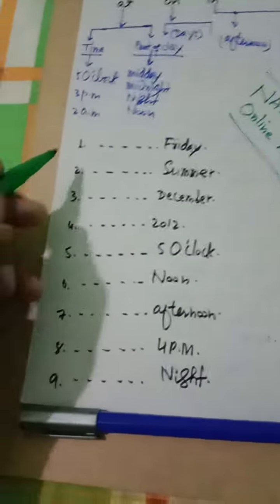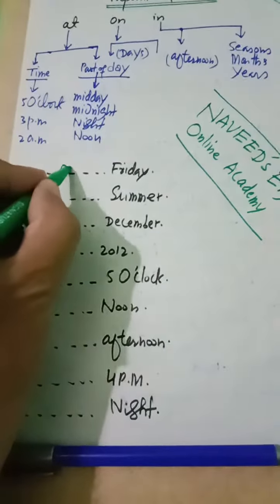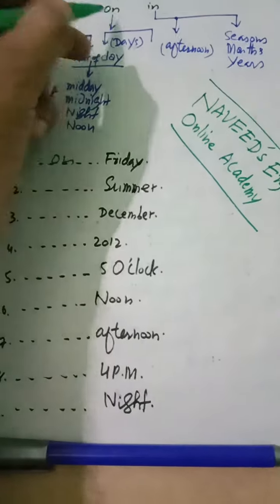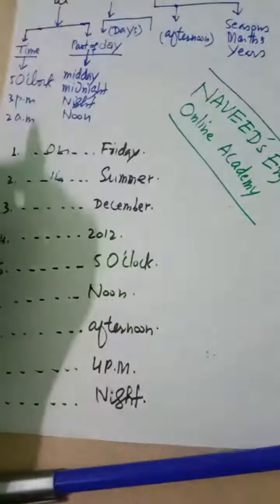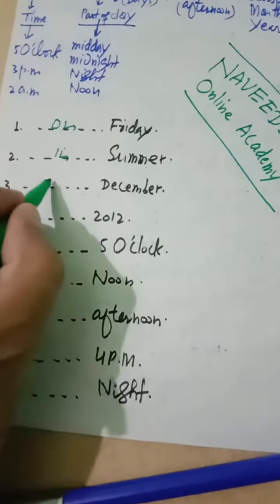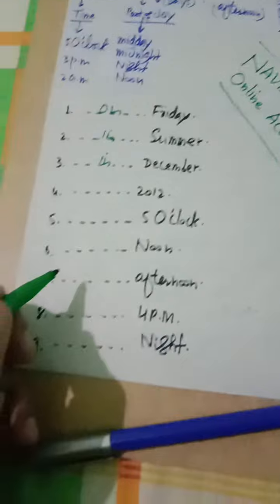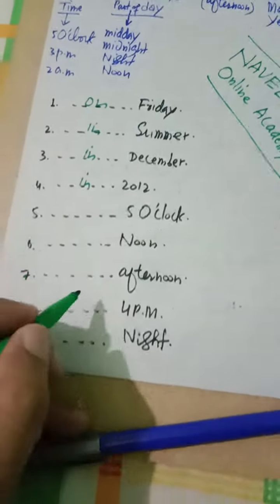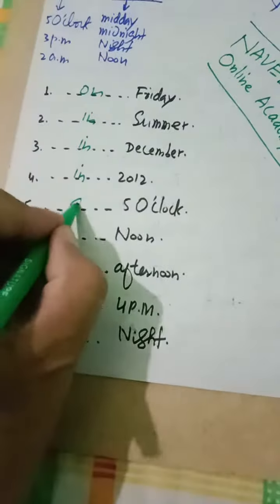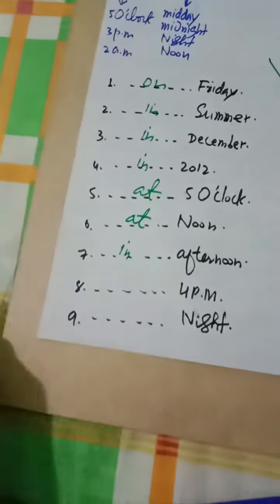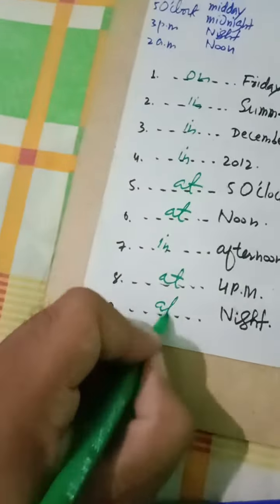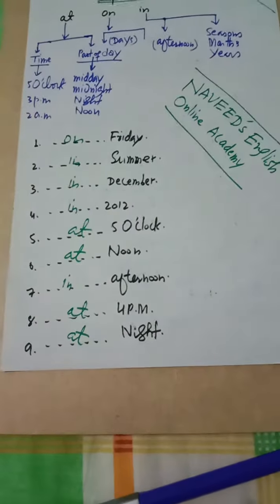Here are some examples. For example, on Friday — day है, तो On होगा। In summer — name of season, season के साथ इस्तेमाल होगा। Or in December — name of month। In 2012 — year, name of year। At 5 o'clock, at noon, in afternoon, at 4 p.m. So in this way, we can use preposition of time.